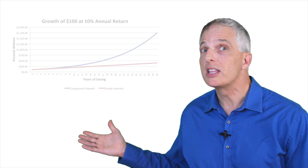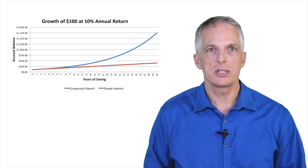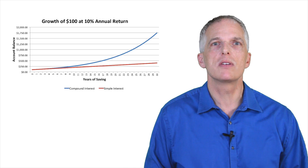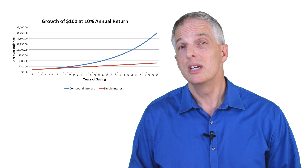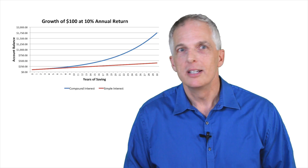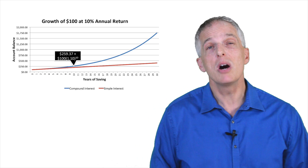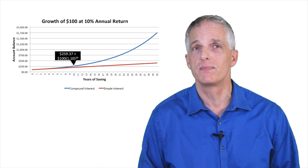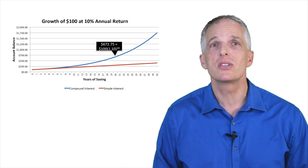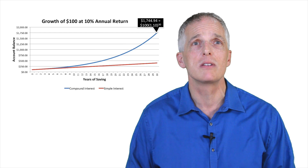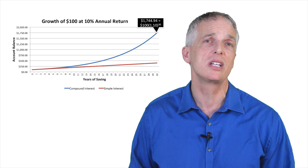Now let's see what happens when we earn compound interest, which is how interest will generally accrue in the real world if we let our savings work for us. The blue line in this graph shows how our savings balance grows over time with compound interest. In the early years there is little difference — in our prior example the difference was a mere $1 after two years. However, the difference grows over time. After 10 years, the account earning compound interest has grown to almost $260, or $60 more than the simple interest account. After 20 years, it has grown to $672.75, more than double the simple interest account. After 30 years, it has grown to almost $1,750, more than four times the simple interest account.